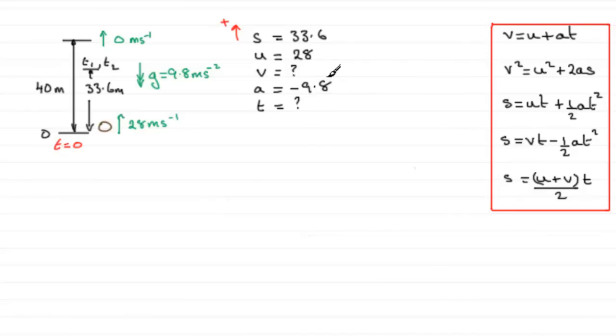So which one of these equations here would we want to use? It'll be the one that leaves out V. So when we look at the ones down through here, it's got to be S equals UT plus a half AT squared. It leaves out V.